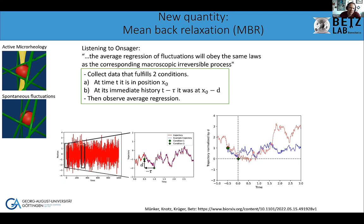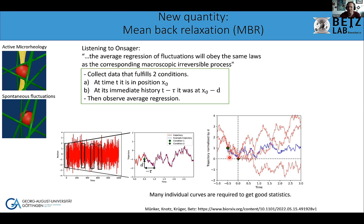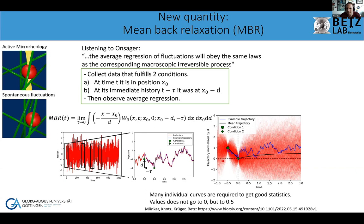This gives us curves where all trajectories collapse: at the reference time (minus tau), the particle was at distance 1 (normalized by d), and then we watch the ongoing time evolution. It's similar to mean squared displacement but without squaring — and we start from a non-zero value due to preselection. In equilibrium systems, both in simulations and experiments, this value always goes to one-half d.